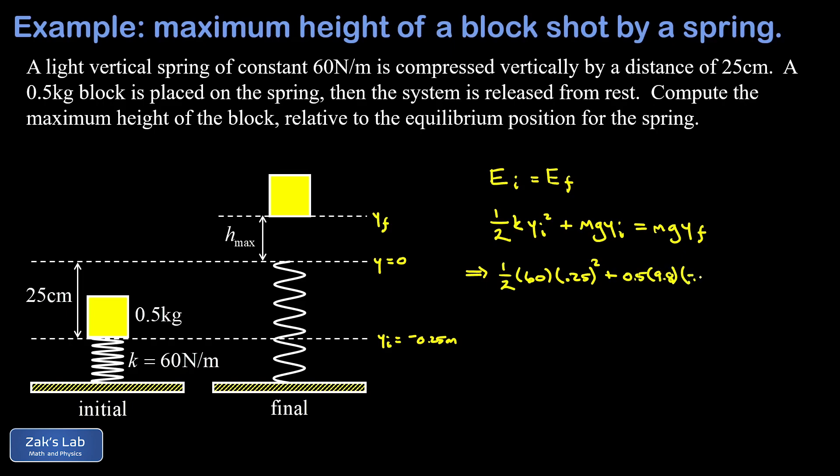And y initial, which was negative 0.25, giving us a negative potential energy term in the initial state. There's our mass again, 0.5. There's g again, and then y final, we'll go ahead and replace it now with h max.